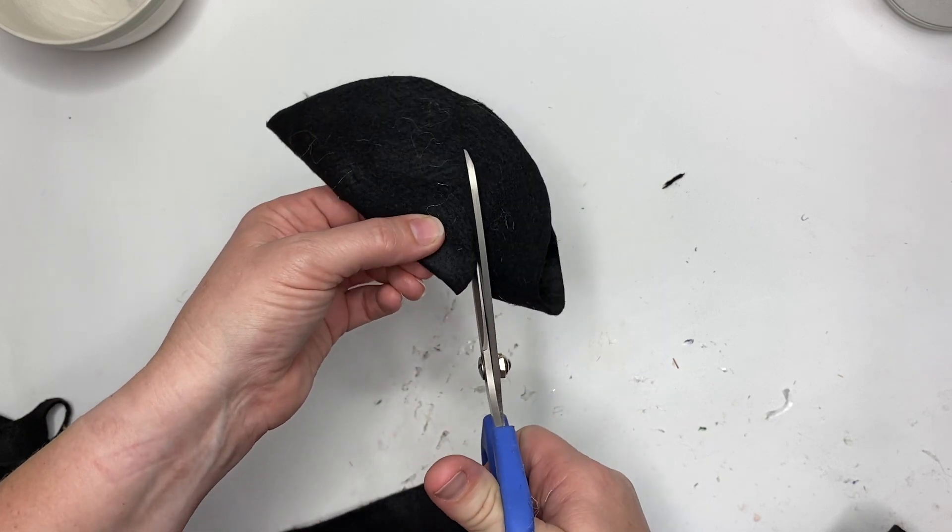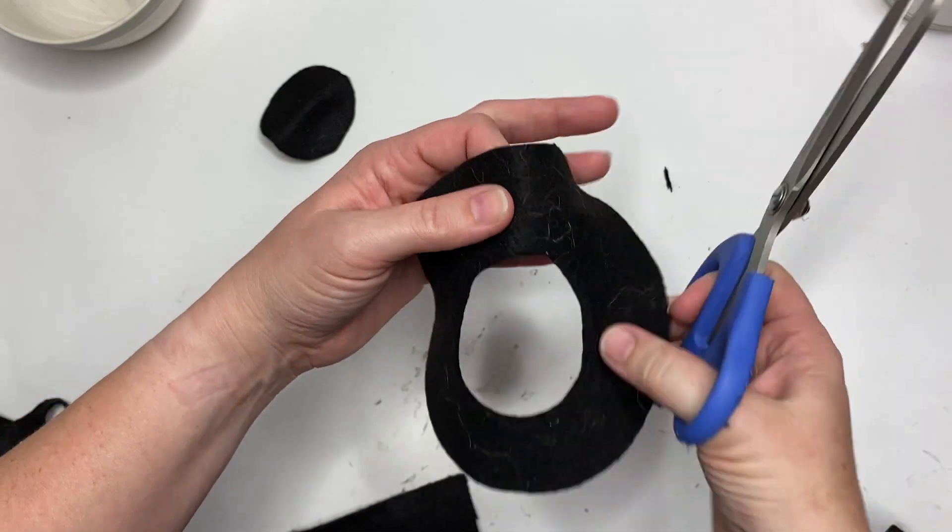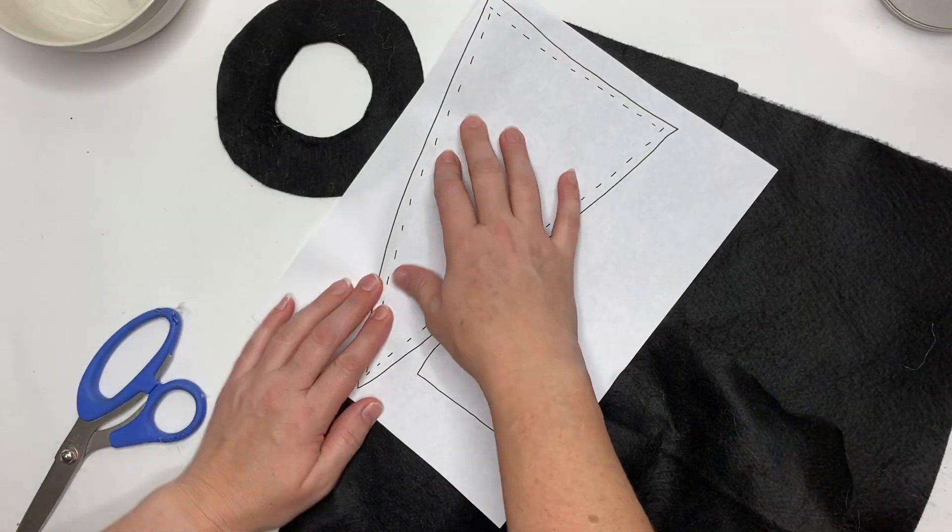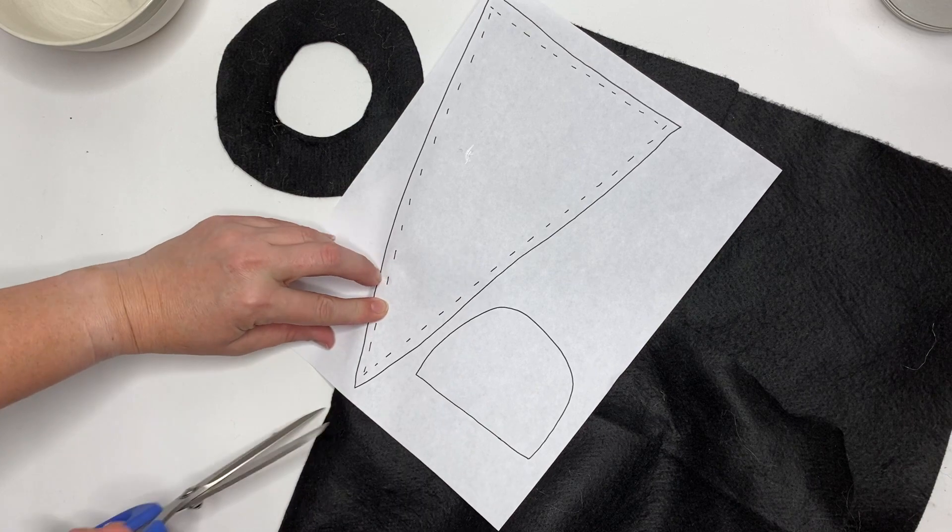I'm gonna cut along the line that I traced with my exacto knife just so it'll be nice and even. I cut two of these—you don't have to, but I just like to finish it because I wanted to pull the hat back.